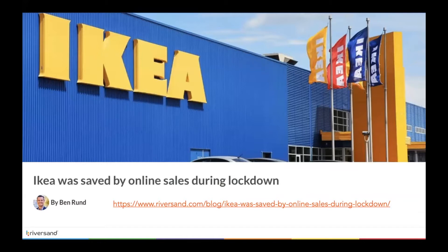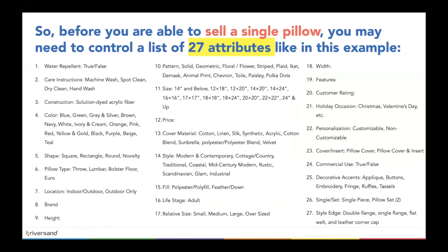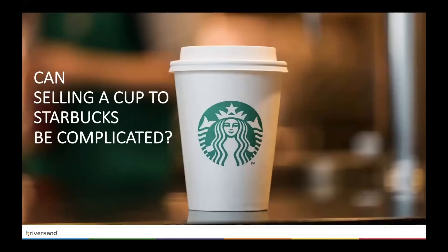But why am I showing you this? Think of Ikea products — not Billy or other shelves. Let's think of a simple pillow. What data do you need to sell a pillow? Surely it can't be complicated — it's a very simple, straightforward product. I picked a pillow and found it has 27 different attributes. One single pillow. There's something behind it — it's just a pillow, but there's plenty of data behind it.